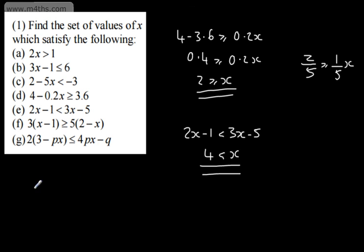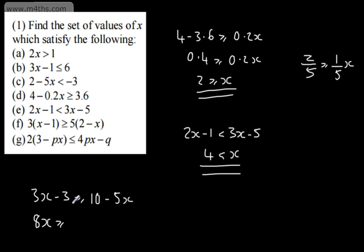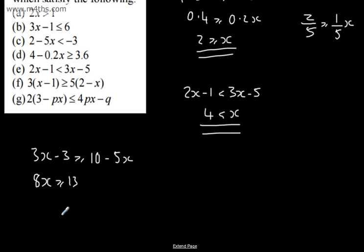Expanding the next one: 3x minus 3 is equal to or greater than 10 minus 5x. Adding 5x to both sides gives 8x, and adding 3 to both sides gives 13, so 8x is equal to or greater than 13. Dividing both sides by 8, x is equal to or greater than 13 eighths — and I'll leave that as a fraction.